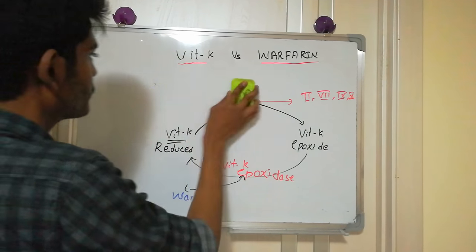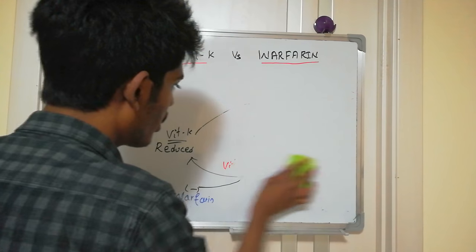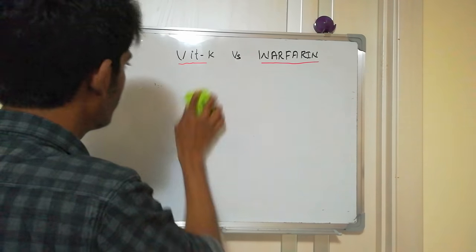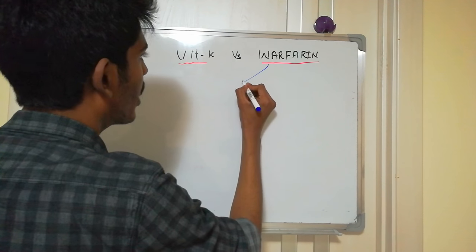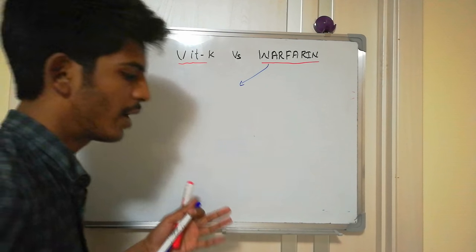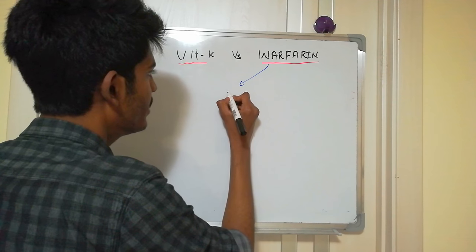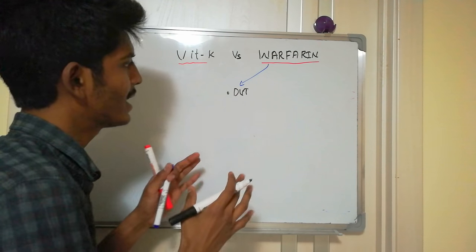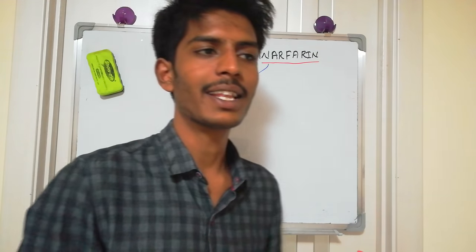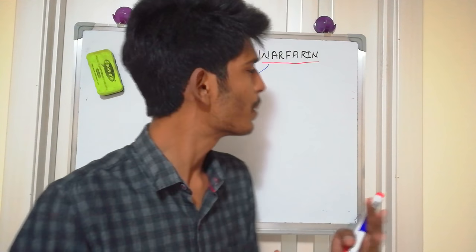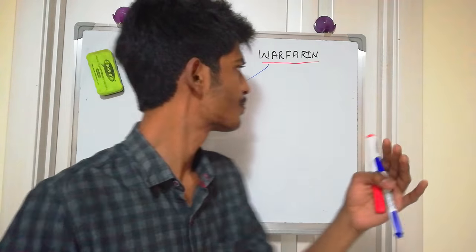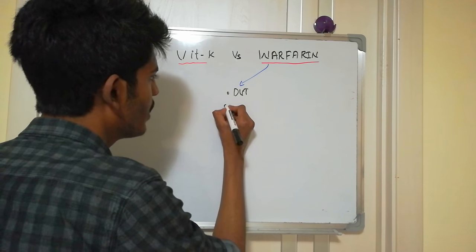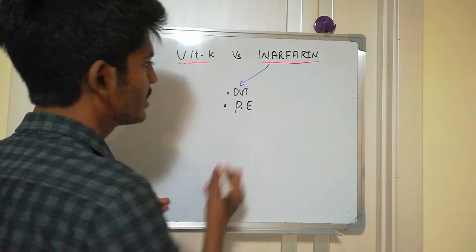The uses of warfarin include: DVT — deep vein thrombosis — where there is clot formation in the deep veins of the leg, so we use warfarin for prophylaxis of deep vein thrombosis. We also use it in pulmonary embolism prophylaxis — to prevent pulmonary embolism.